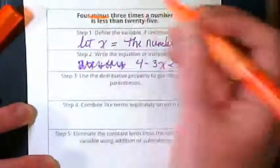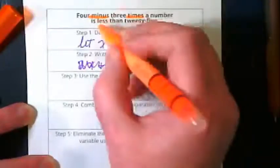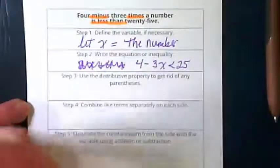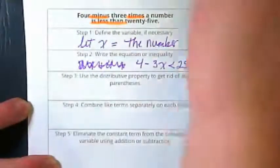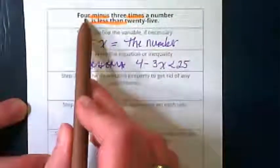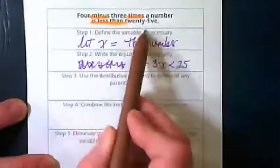Minus, times, less than. Those keywords are telling us our actions. We've got the number 4. We've got the number 3. And we've got the number 25.